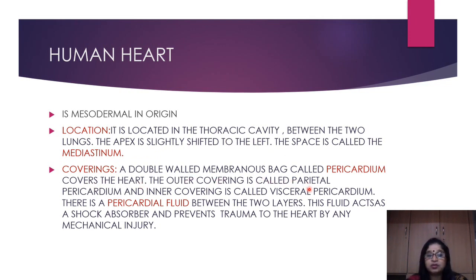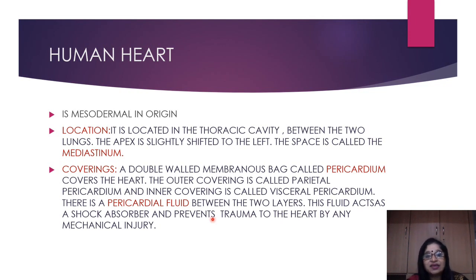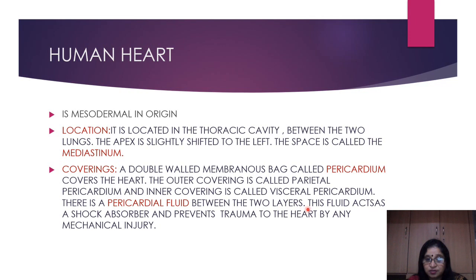The outer covering is called the parietal pericardium and the inner covering, close to the heart tissue, is called the visceral pericardium. Between the two layers is a space called the pericardial cavity, which contains pericardial fluid. This fluid keeps the two membranes separated so they do not stick to each other, and it also acts as a shock absorber, preventing trauma to the heart from mechanical injury.